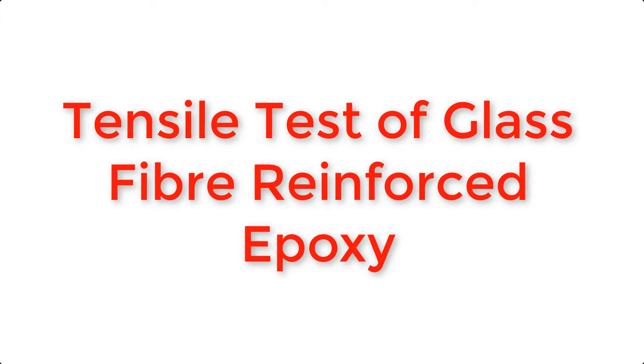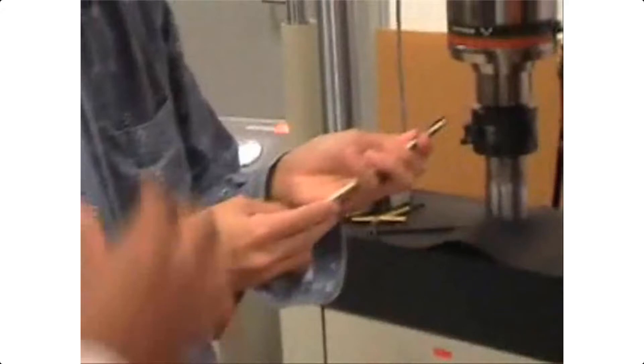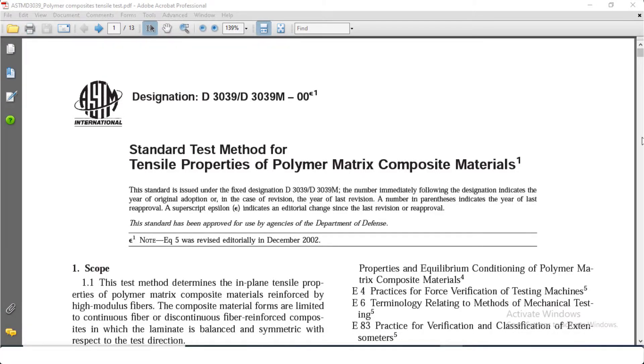Hi everybody, today I would like to show you a tensile test of glass fiber reinforced epoxy. This is a kind of GFRP, which means glass fiber reinforced plastic. Let me tell you about the standard. For almost all mechanical tests there are ASTM standards, so you have to find out the literature of ASTM standard for that test.